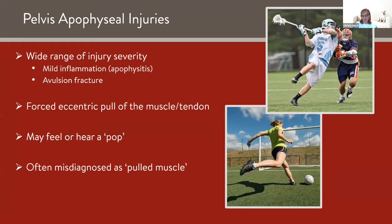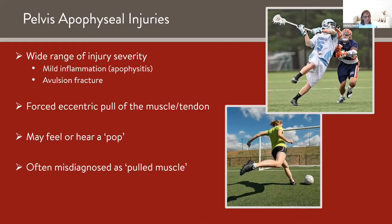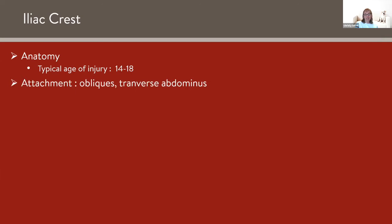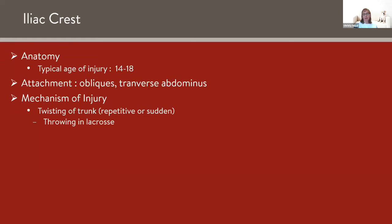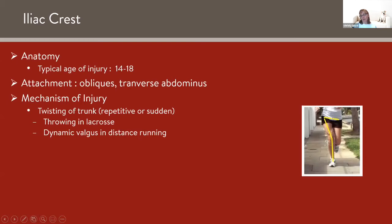My most recent patient had the injury four to five weeks ago, was treated at home, thought he was better, went back and re-injured. Looking at the iliac crest: this is a slightly older, high school to college type injury. The oblique muscles attach to the iliac crest. The mechanism is usually a twisting of the trunk, either repetitive or sudden — like throwing in lacrosse. Dynamic valgus in distance running can also cause this; someone who just joined cross country and has pain on the outside of the hip with bony tenderness. Breaking a tackle in football or rugby from the forced pull is another common mechanism.